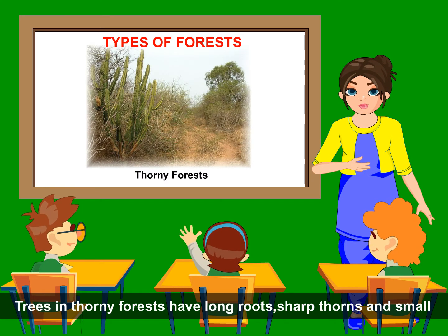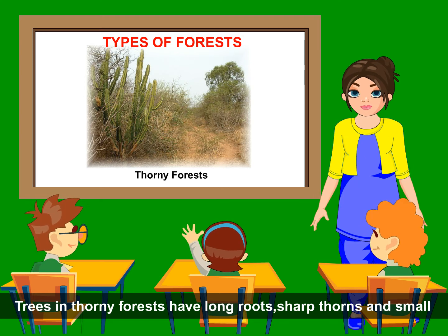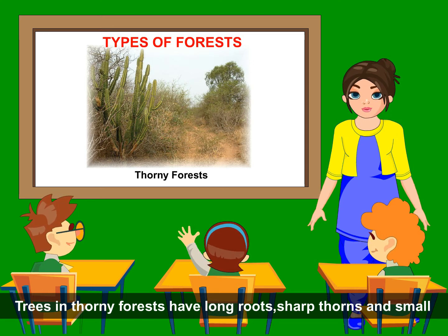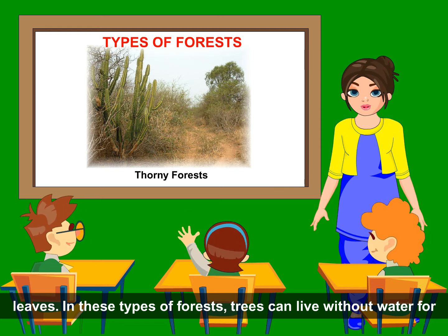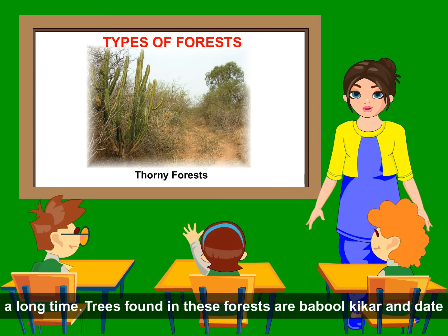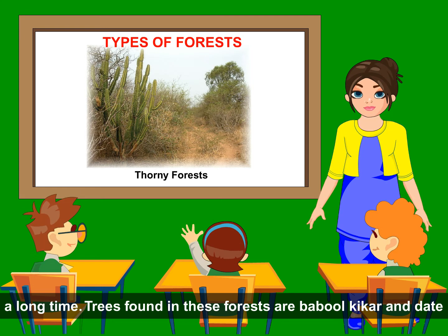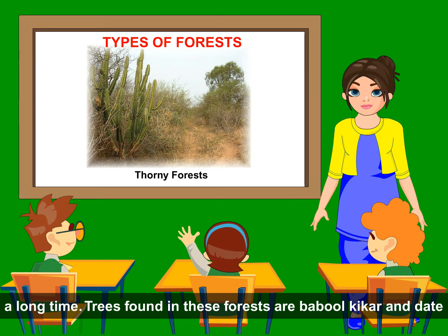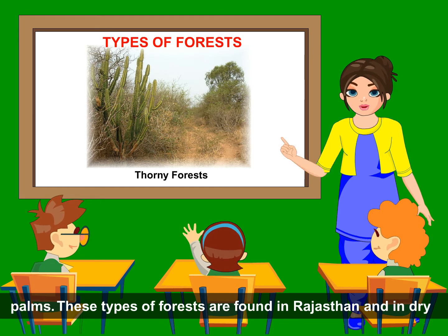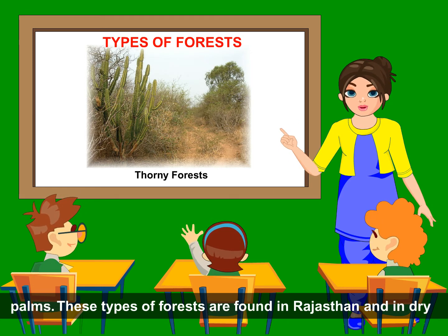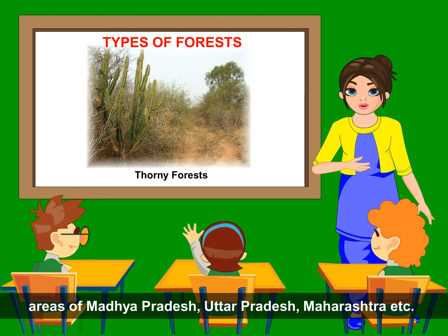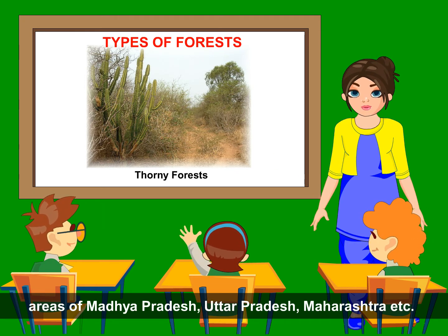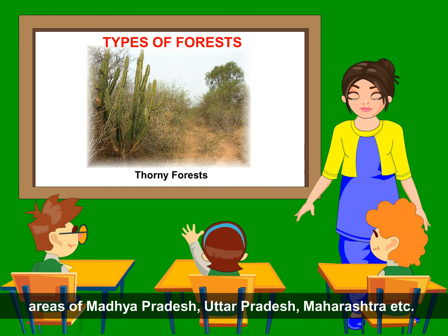Thorny Forests. Trees in thorny forests have long roots, sharp thorns and small leaves. In these types of forests, trees can live without water for a long time. Trees found in these forests are babool, keekar and date palms. These types of forests are found in Rajasthan and in dry areas of Madhya Pradesh, Uttar Pradesh and Maharashtra etc.